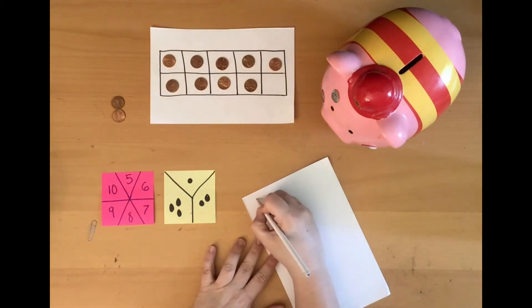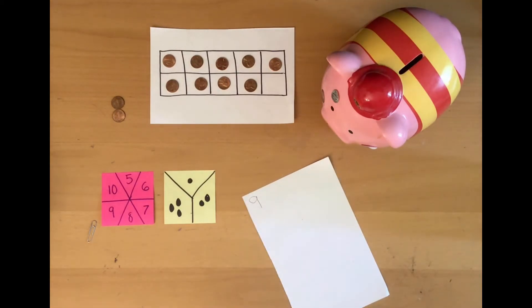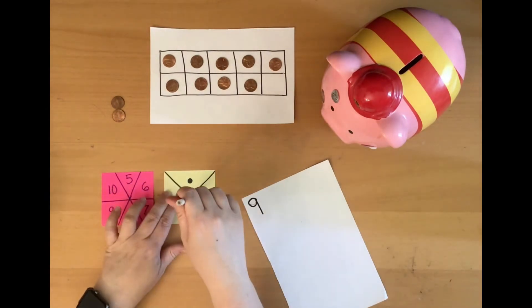So I have 9 pennies, not in my piggy bank yet. I have 9 pennies. I'm just going to change to a marker to make sure you can see. Now I need to find out how many of those I'm going to put in my piggy bank. So I'm going to use this spinner.